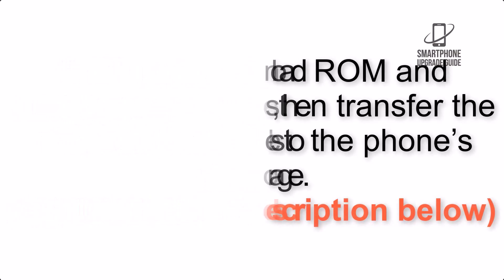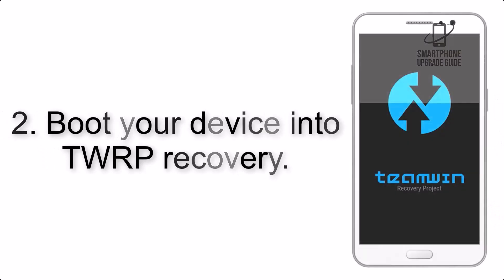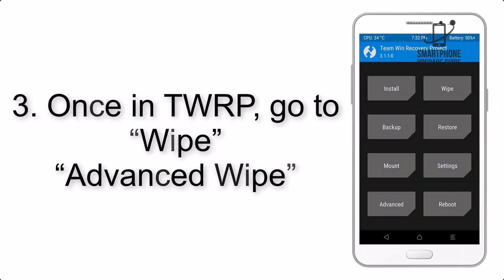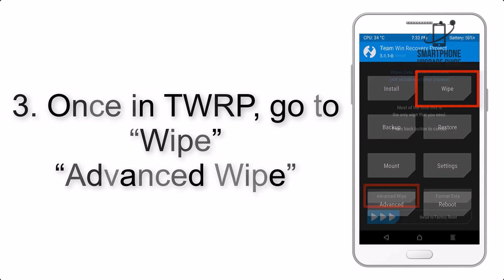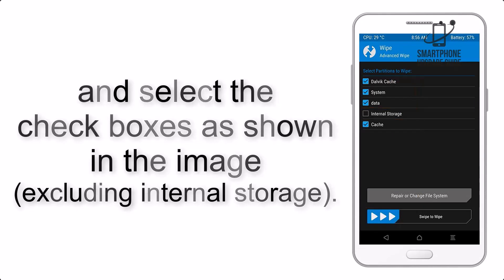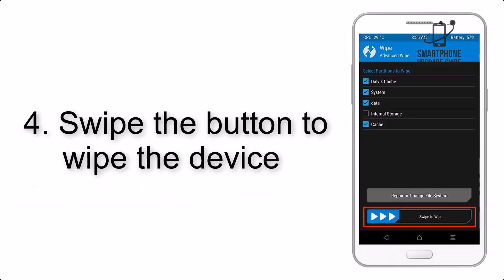Step 2: Boot your device into TWRP recovery. Once in TWRP, click on Wipe, then Advanced Wipe, and select the checkboxes as shown in the image, excluding internal storage. Step 4: Swipe the button to wipe the device.